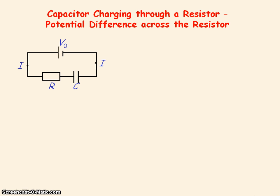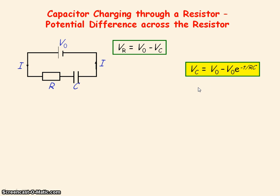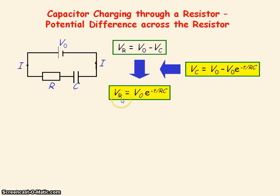To determine the potential difference across the resistor, we need to use Kirchhoff's second law, where the voltage from the power supply V₀ is equal to the voltage across the resistor plus the voltage across the capacitor. So the voltage across the resistor is equal to V₀ minus the voltage across the capacitor. If we substitute for V_C into this equation for V_R, we see that the voltage across the resistor follows an exponential decay.